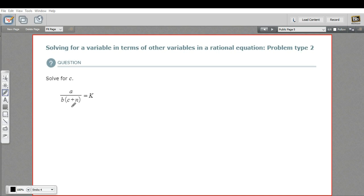Whenever your variable is stuck on the bottom of the fraction, I think the best thing to do is just multiply both sides by that denominator. So my first step is just going to be multiply by b times c plus n on both sides. What that does over here, of course, is just cancel.